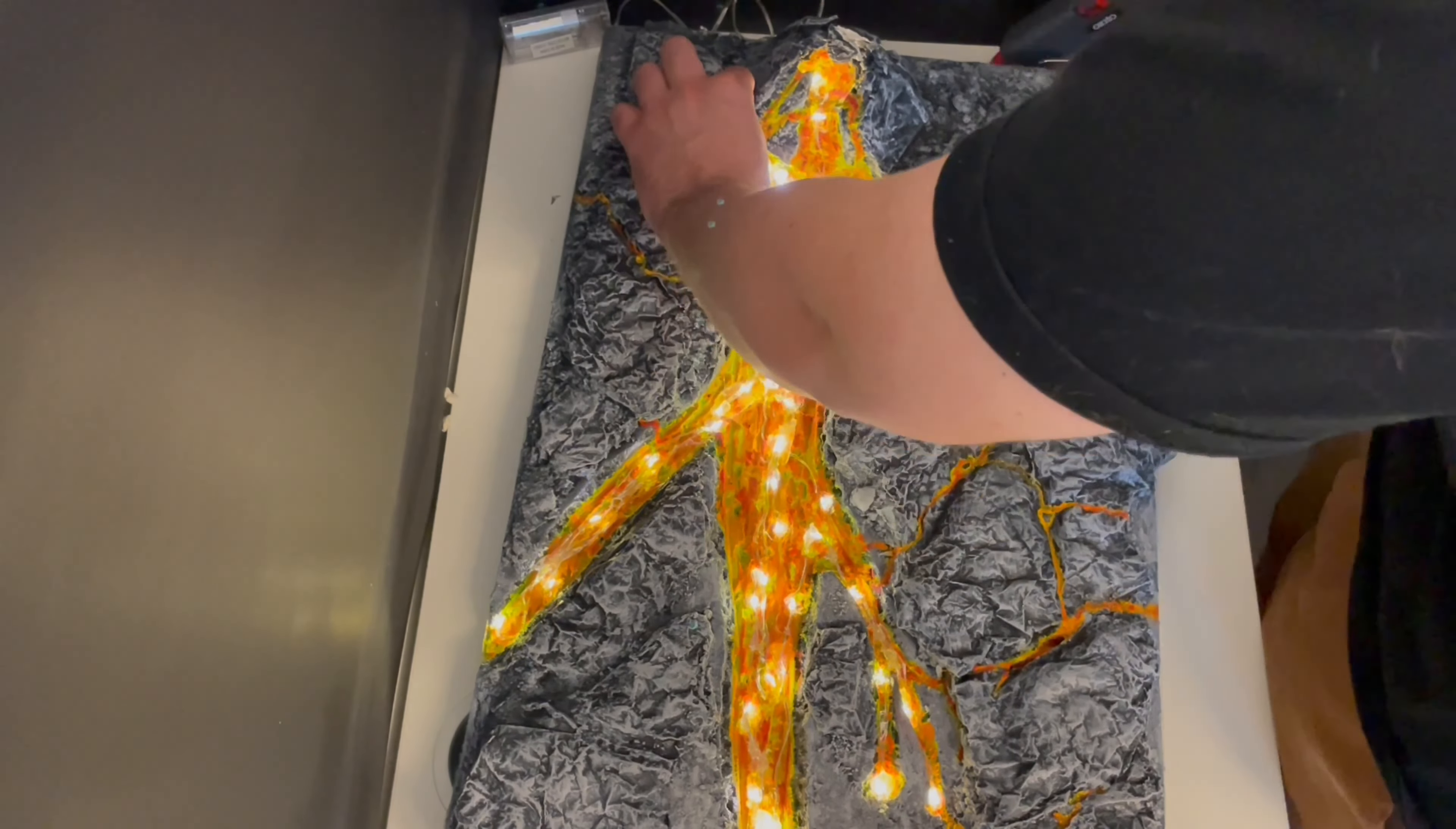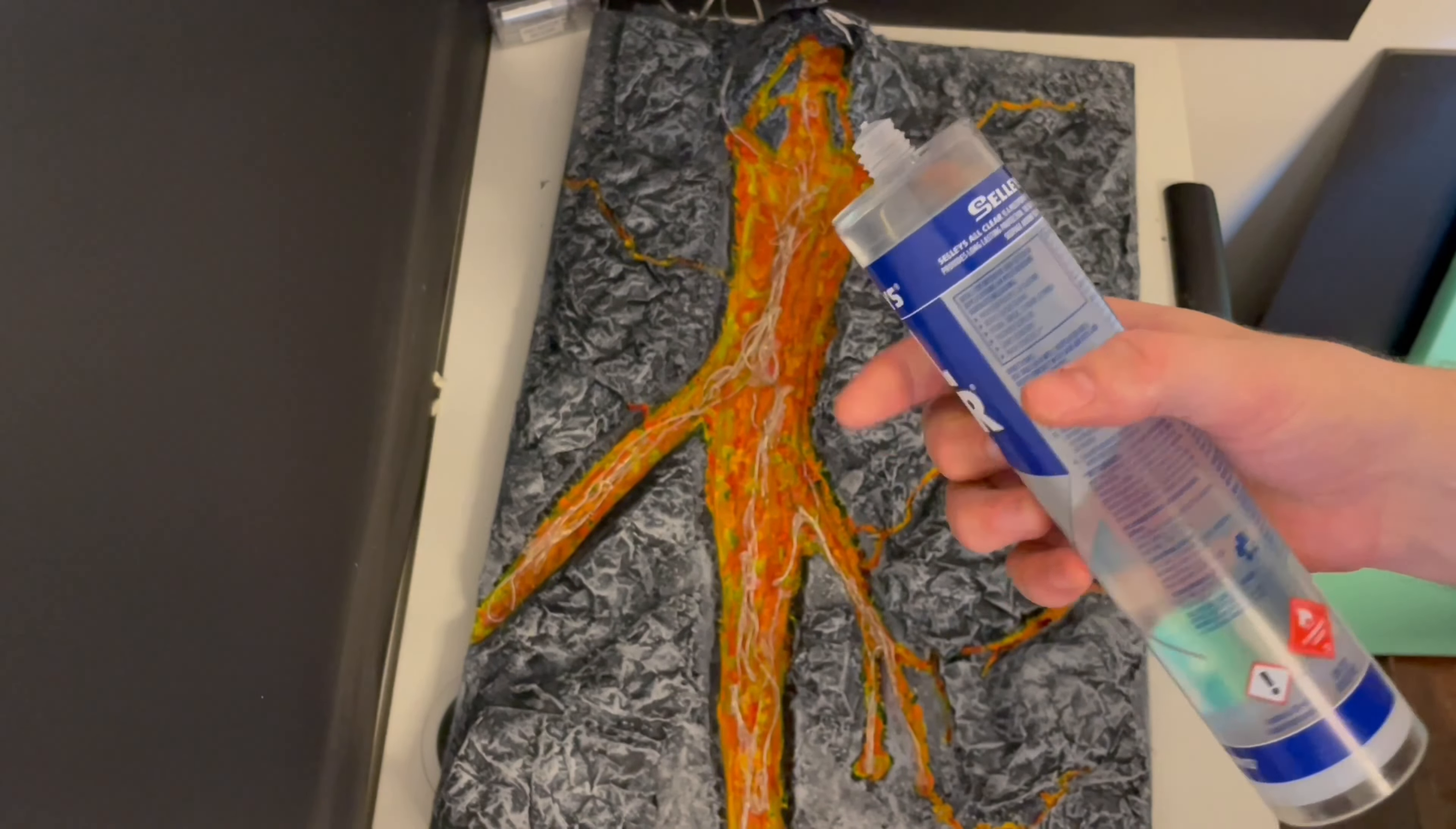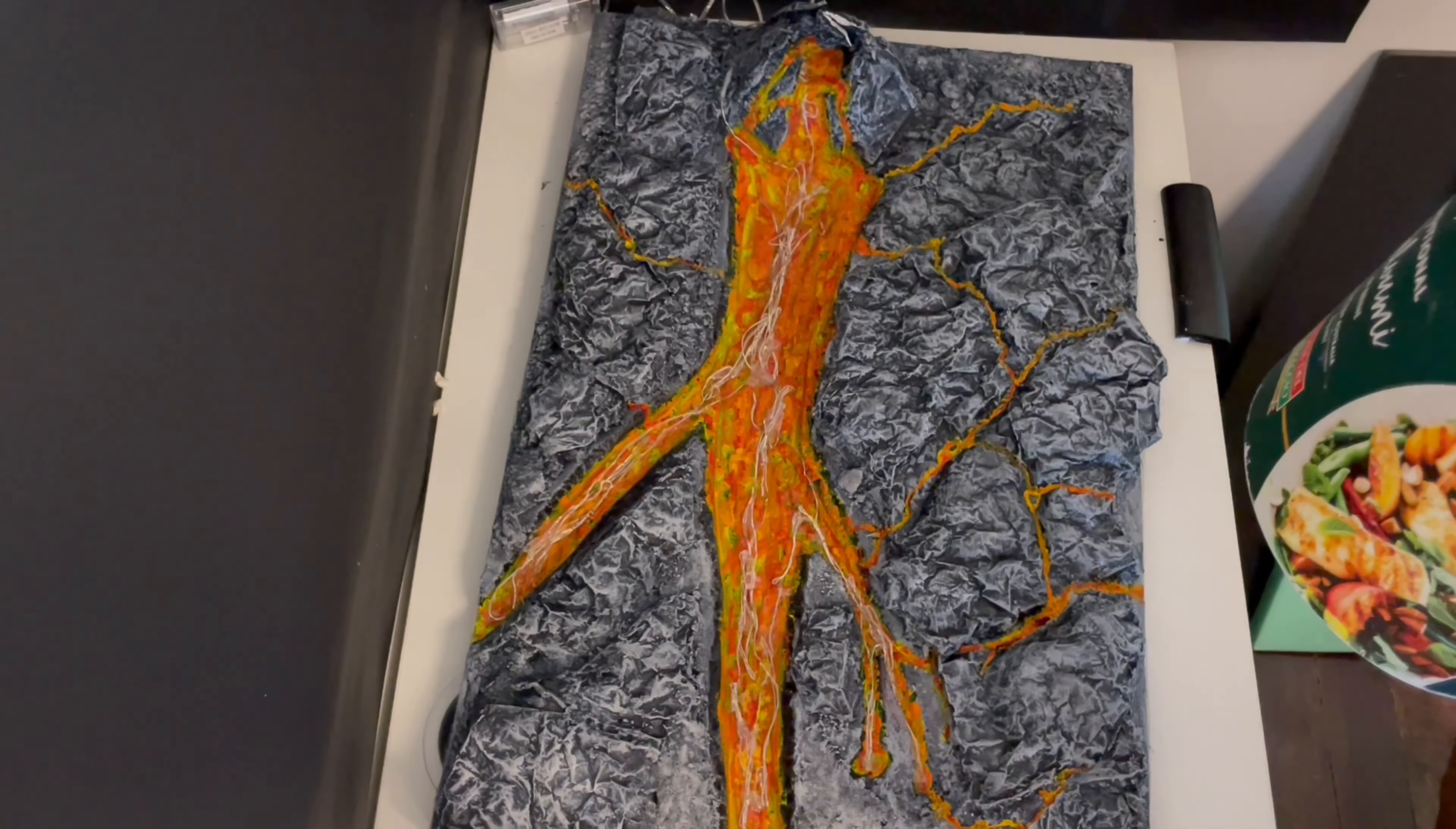Now for the lava, I'm just using a co-polymer based silicon caulk which you can pick up for like five to ten dollars from the hardware. Just squeeze it out into a bucket and you'll want to use the isopropyl alcohol to help thin it down and make it easier to work with.